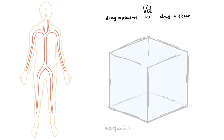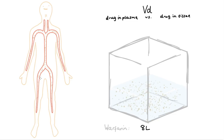Warfarin is an example of a drug with a low VD — only 8 litres. Warfarin loves attaching to proteins in the blood plasma, and thus doesn't move out of the blood vessels and into the surrounding tissue. So you'd only need 8 litres of water in this box to allow for the same concentration in here as in the plasma, if you gave someone, say, 10 milligrams of warfarin.